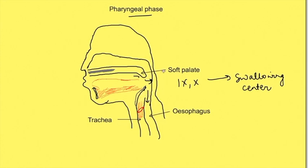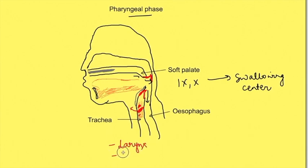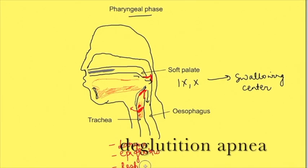The series of responses include contraction of the superior constrictor of the pharynx and elevation of the soft palate so as to close the nasopharynx. Then there is contraction of the laryngeal muscles; the larynx is pulled upward and anteriorly, and the laryngeal opening is closed. There is also flipping back of the epiglottis for closure of the air path, with inhibition of respiration. So to close the air passage, three things take place: the larynx moves anteriorly and upward with closure of the glottis, the epiglottis closes the path, and there is inhibition of respiration.